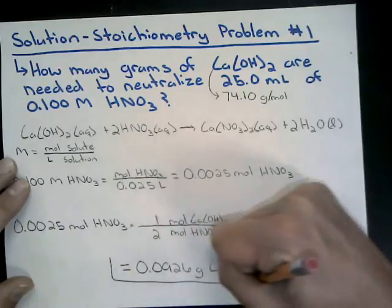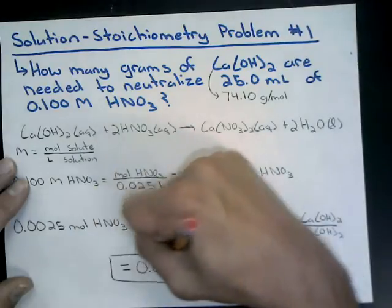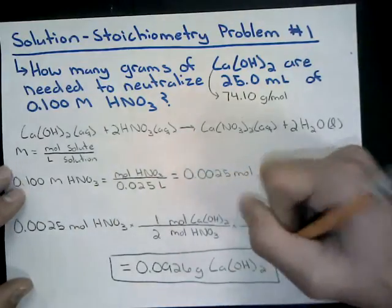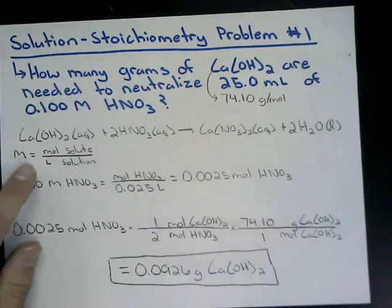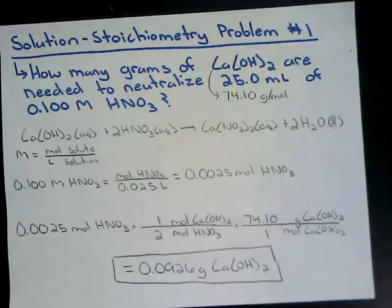Rounding to three significant digits, our final answer is 0.0926 grams of calcium hydroxide needed to neutralize 25 milliliters of 0.100 molar nitric acid. This ties together stoichiometry with the molarity concepts we've just learned.